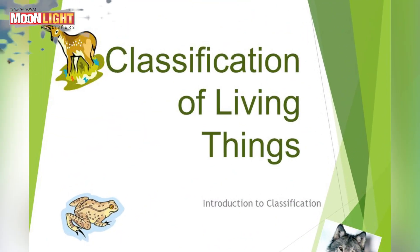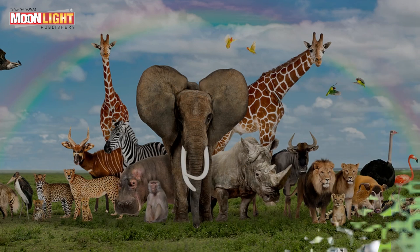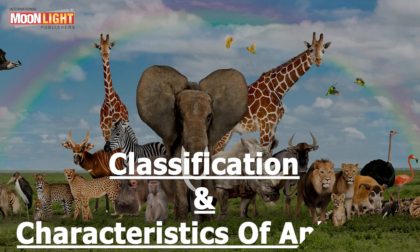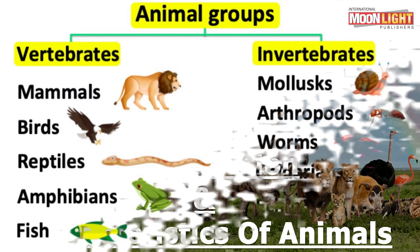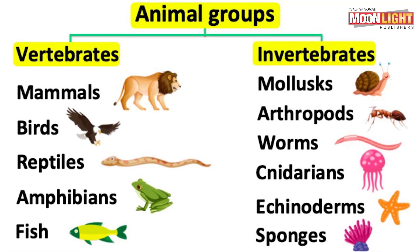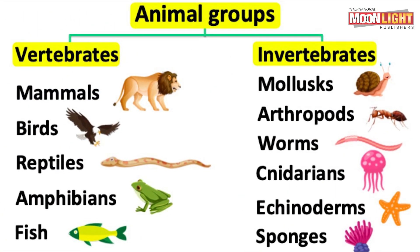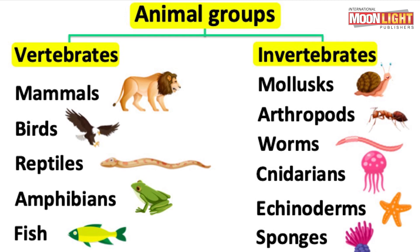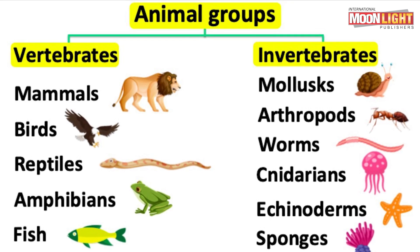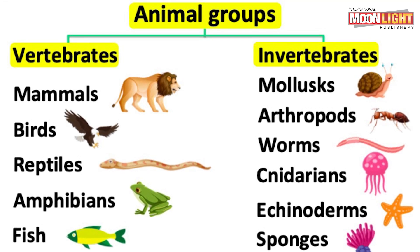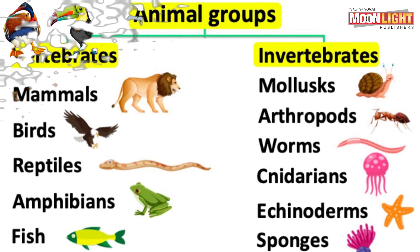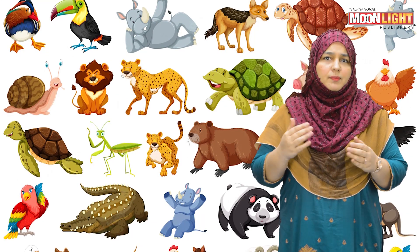Students, in your book page number ten, we have our next topic — Classification and Characteristics of Animals. Animals are divided into two major groups: one is vertebrates and the second is invertebrates.